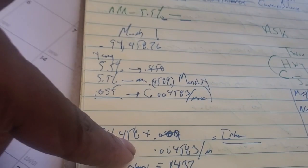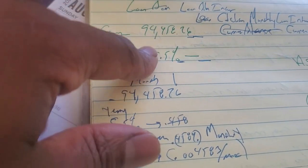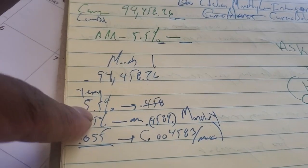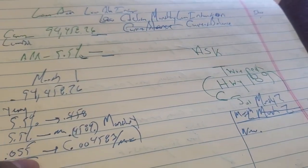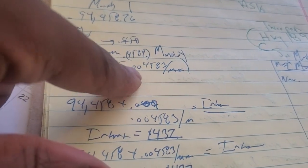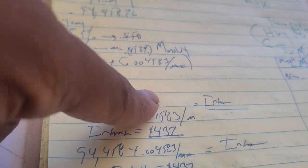But the way they do it with the banks, they take your balance and multiply it by the monthly rate. So if you want to calculate your monthly, just take your 5.5% divided by 12. That gives you your monthly. Mine was 0.004583 a month.